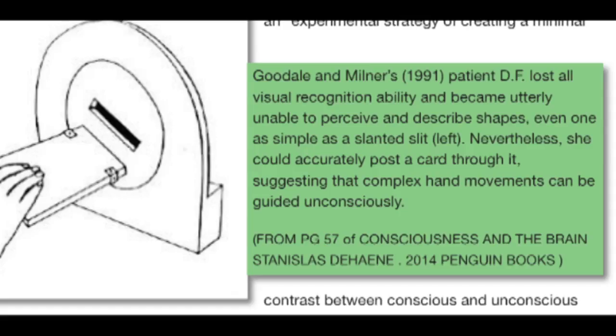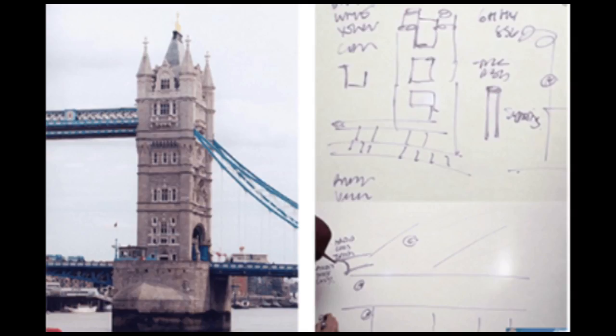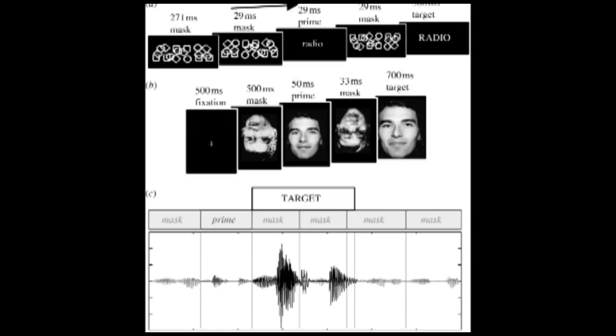A facet of human perception capable of allowing a visually impaired patient to insert a card through a slanted slot she could not consciously perceive, or guide a blind remote viewer's pen to sketch the main structural elements of the London Tower Bridge accurately without his conscious awareness of the target structure does exist.